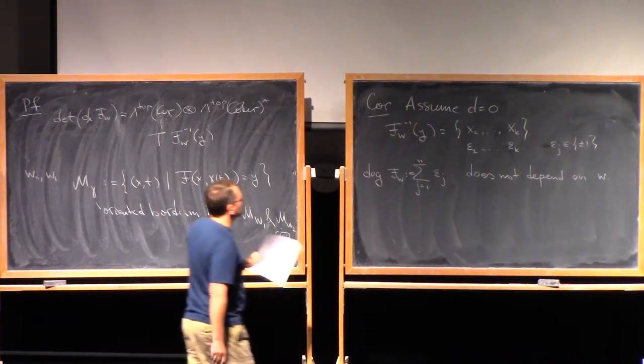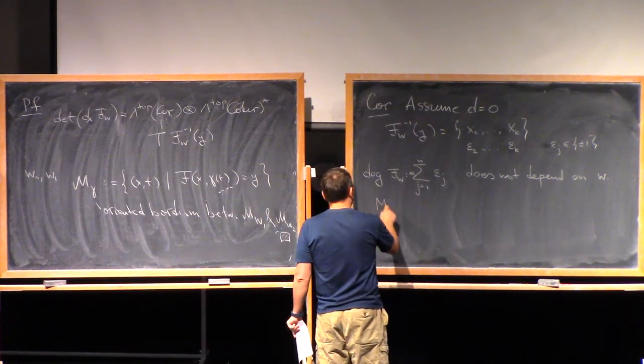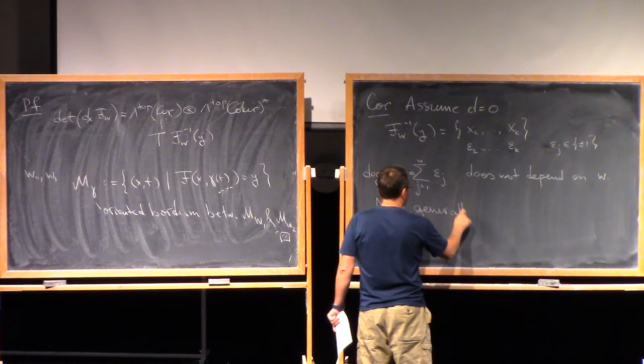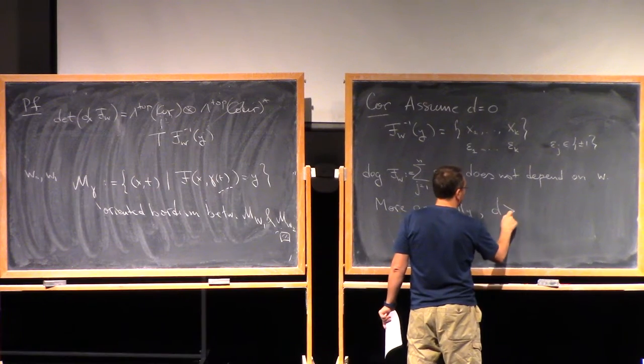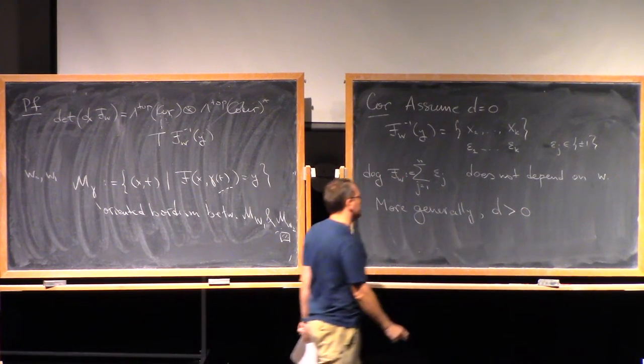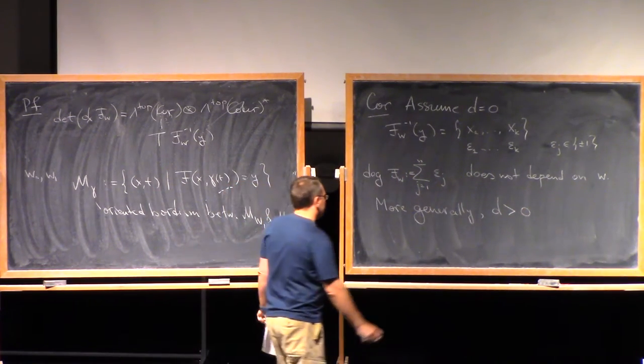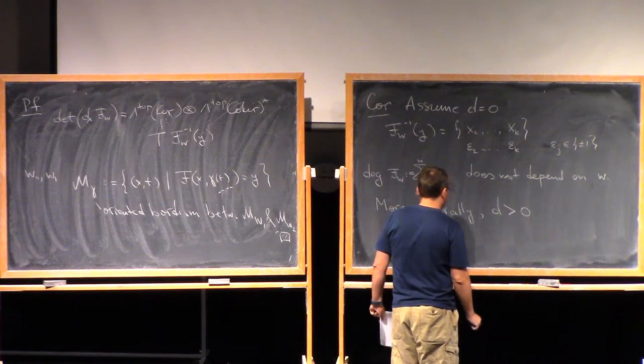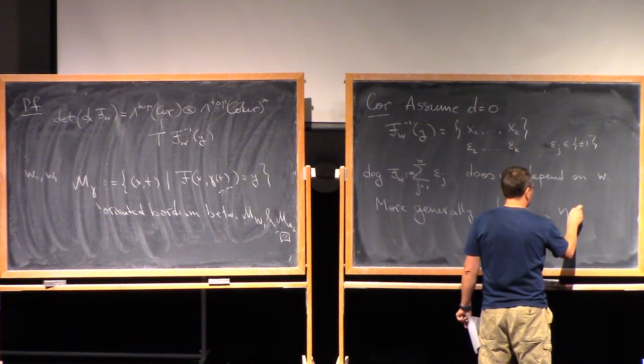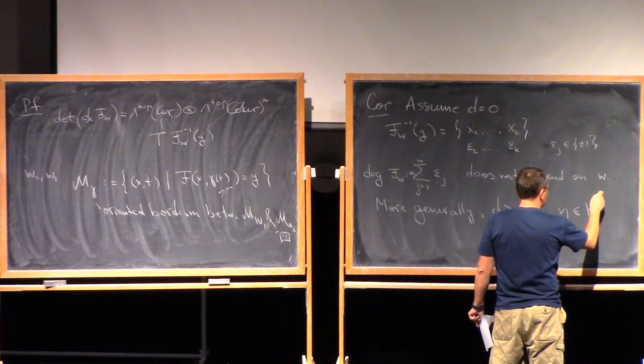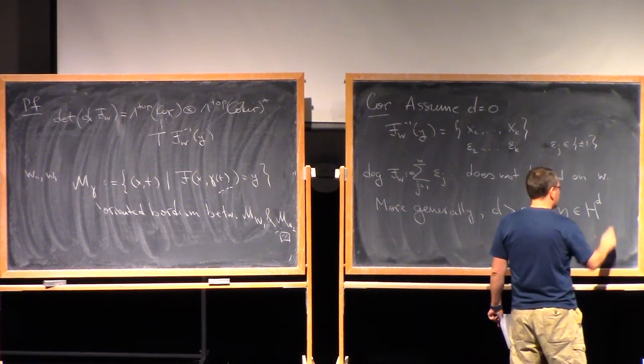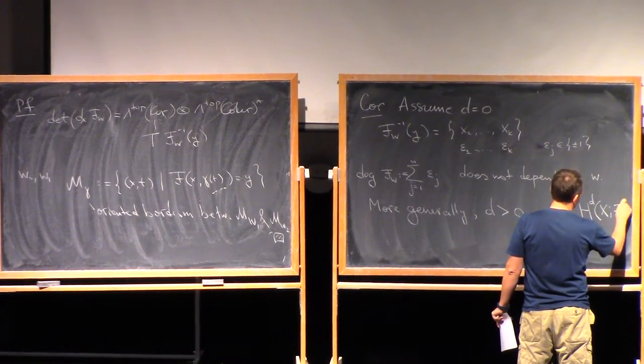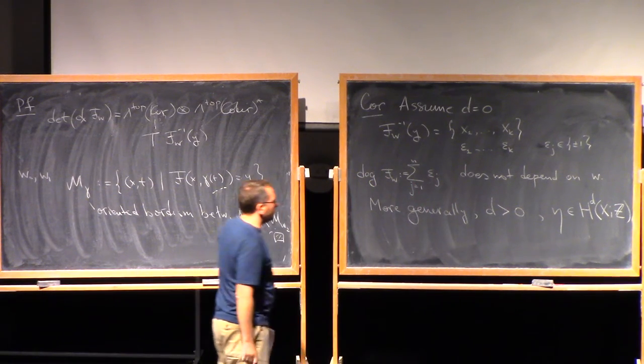So I can take the sum of all those signs, and the statement is this does not depend on w. And this is, you could call, the degree of fw. And even more generally, so if you have d is bigger than zero, then assume we also have a cohomology class of degree d in x with integral coefficients.